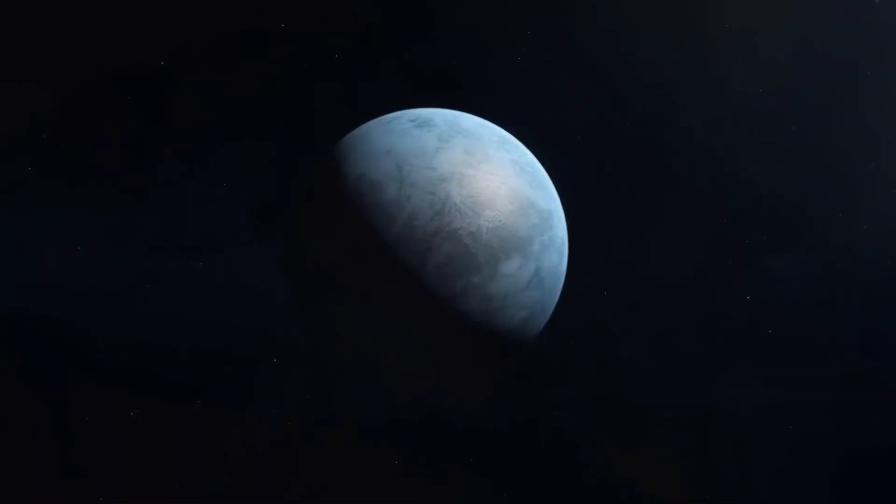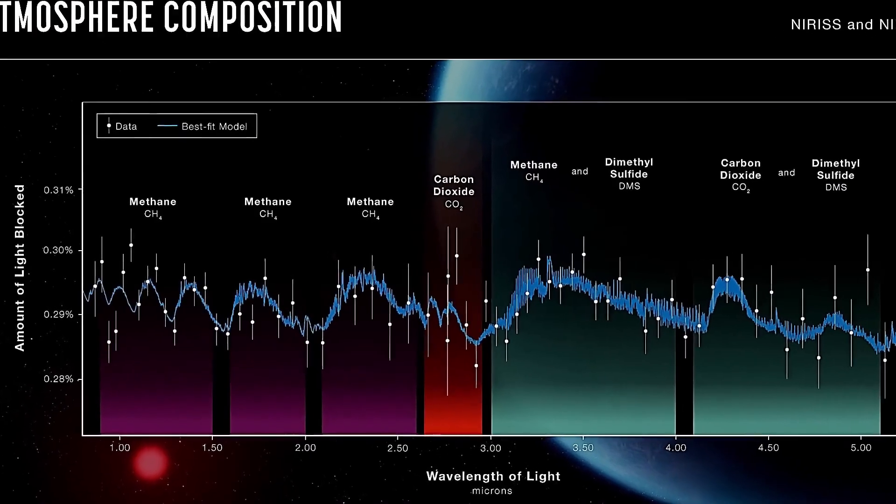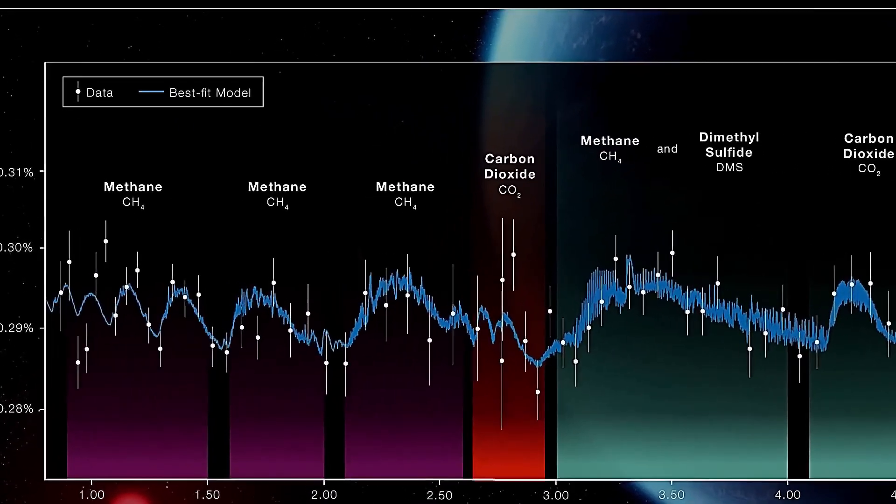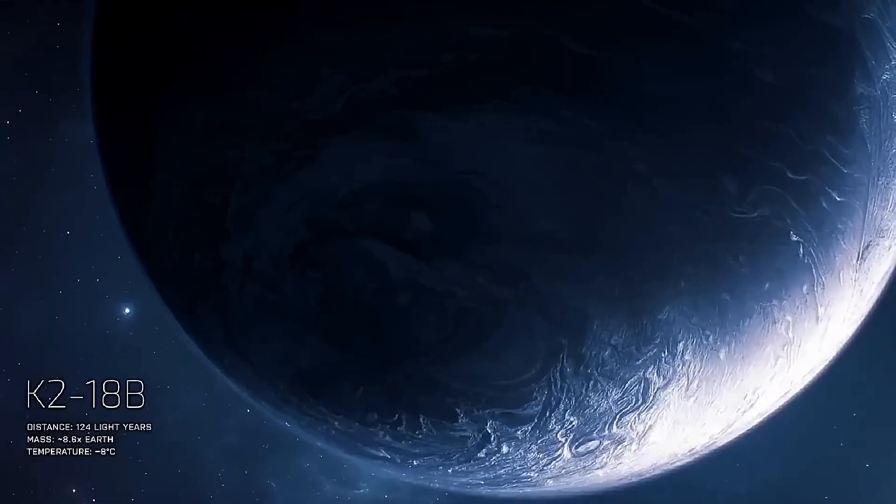The intense heat doesn't just stop at vaporizing iron. The planet's fierce winds carry this iron vapor to the cooler night side, where it condenses back into liquid form and falls as rain. Yes, iron rain.